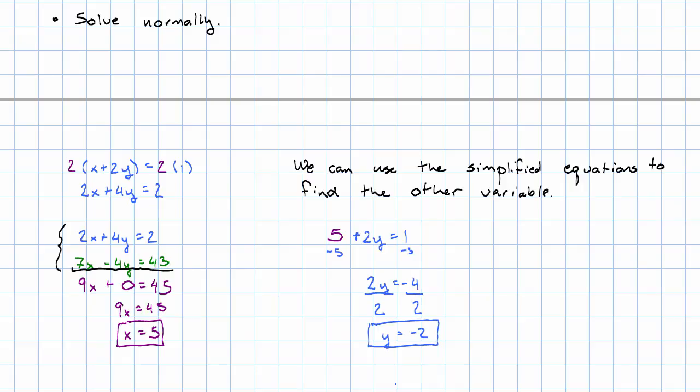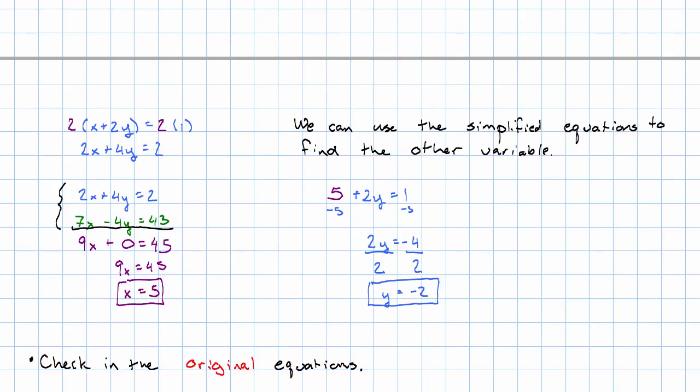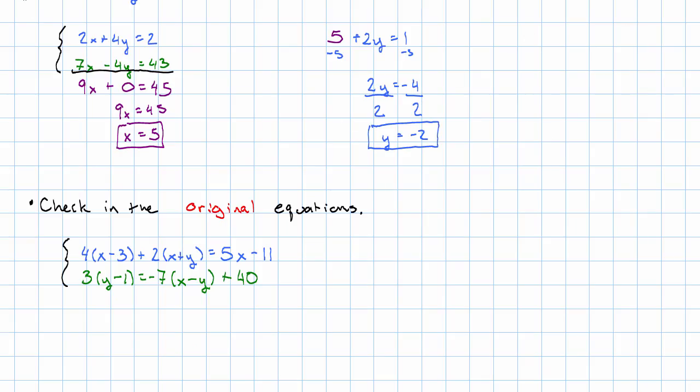Now, this is a process in which we could certainly make mistakes. So, the last thing we should do is to check our answer in the original equations. Plugging into the first equation, we'll have 4 times (x is 5) - 3 plus 2 times (x is 5, y is -2) = 5 times (x is 5) - 11.